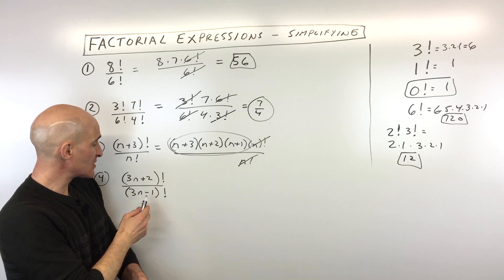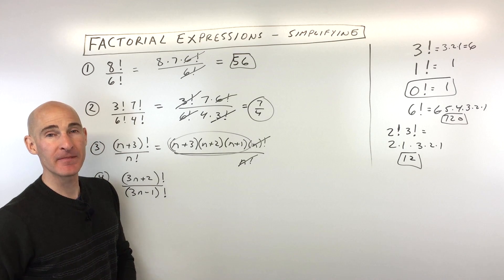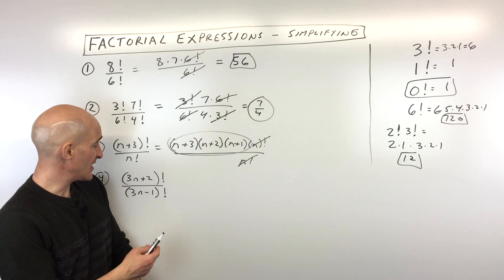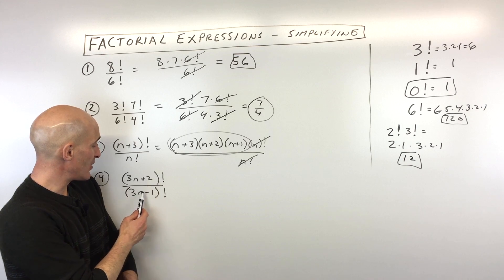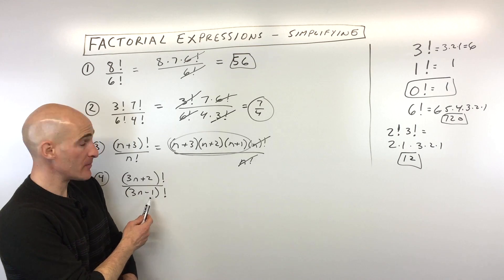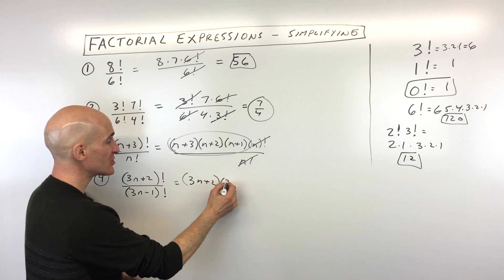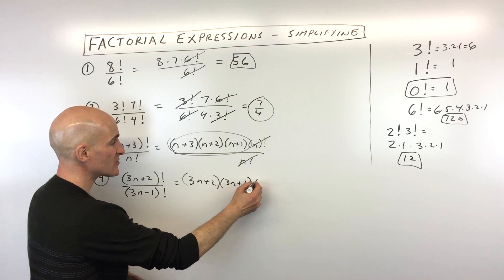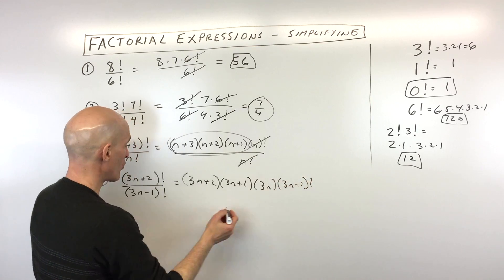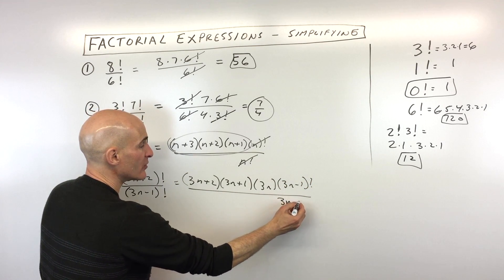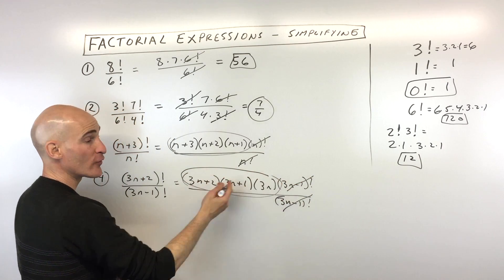And then number four, the last one: we've got the quantity three n plus two factorial over three n minus one factorial. Which one is larger — the numerator or the denominator? Again, the numerator is larger, because three n plus two is greater than three n minus one. So we're going to take that larger one and count down: three n plus two, three n plus one, three n, three n minus one factorial. Now we've got a match with the numerator and the denominator. These cancel, and we're just left with this expression — you can foil that out if you'd like.